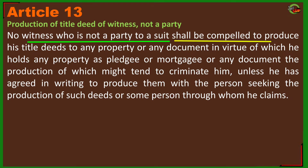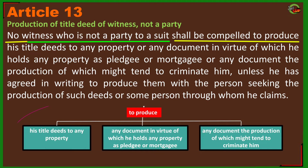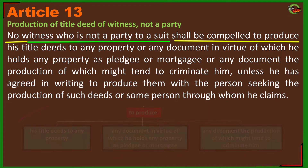Article 13 says that the witness has three documents to present to you. Number one, it is about ownership — you cannot force production of your own personal properties such as title deeds or sale deeds.